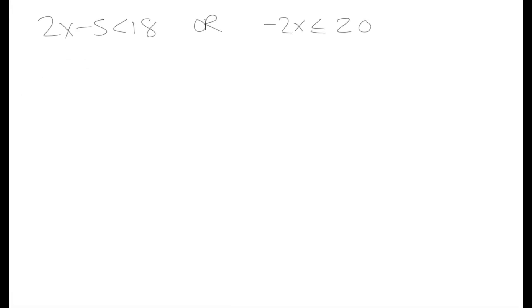In the last video we went over some more examples of solving linear inequalities and we ended off with an example of a compound inequality where we had two different conditions that satisfied a range of values for x. In this video we're going to go into compound inequalities in more detail, and an example of a compound inequality is what we have right here.